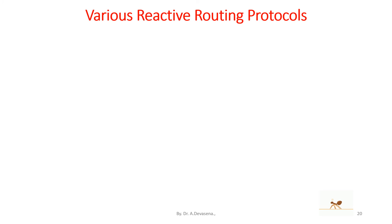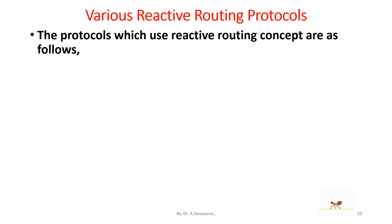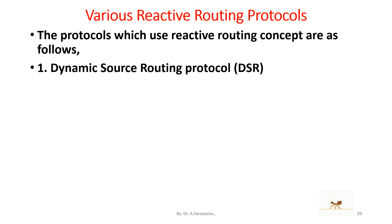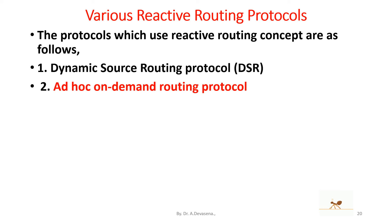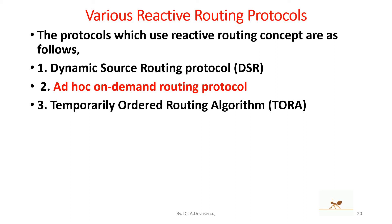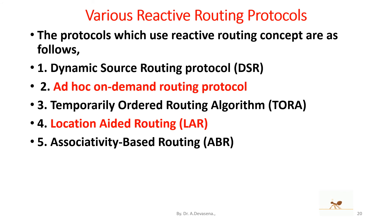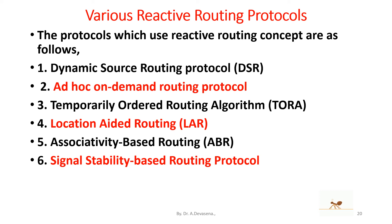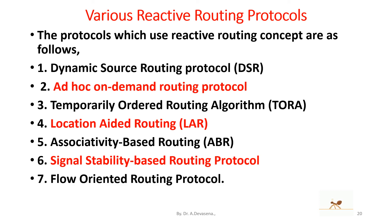The various reactive routing protocols are as follows: first is Dynamic Source Routing protocol (DSR); second is Ad Hoc On-Demand Distance Vector routing protocol (AODV); third is Temporally Ordered Routing Algorithm (TORA); fourth is Location-Aided Routing (LAR); fifth is Associativity-Based Routing (ABR); sixth is Signal Stability-Based Routing protocol; and the last is Flow-Oriented Routing Protocol.